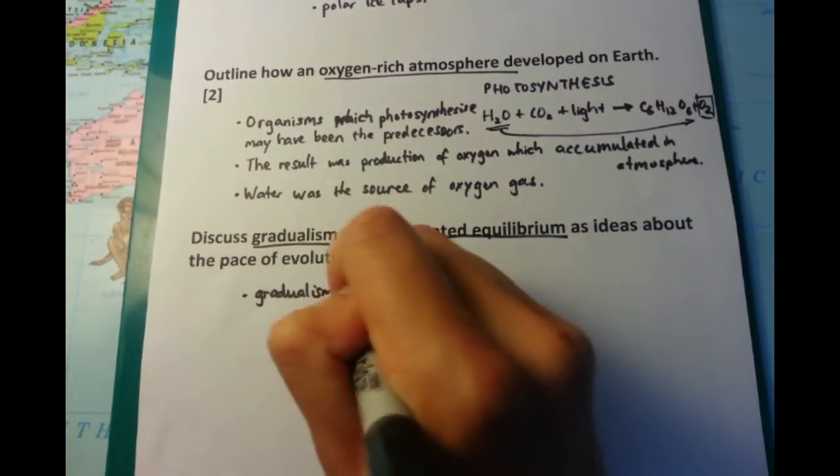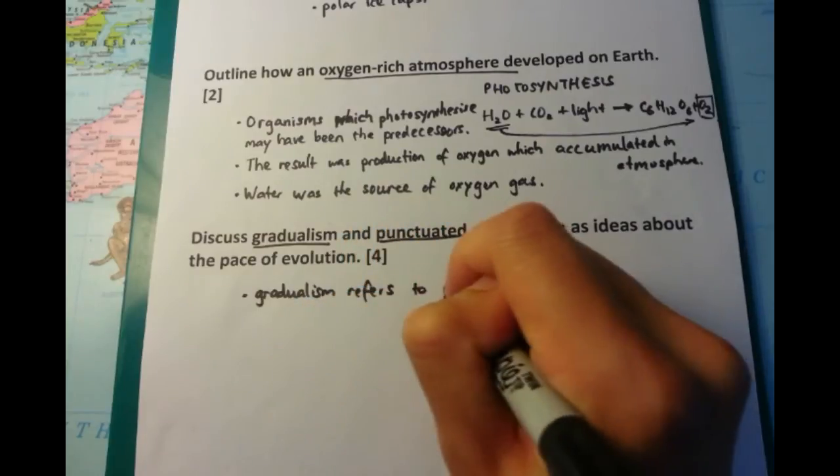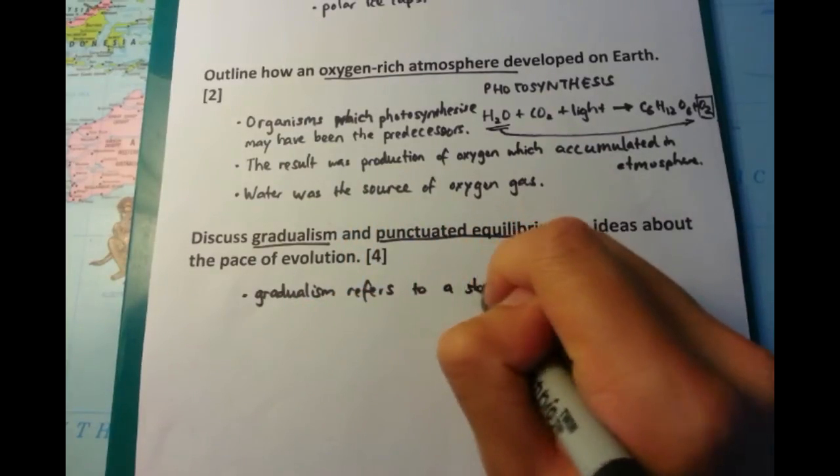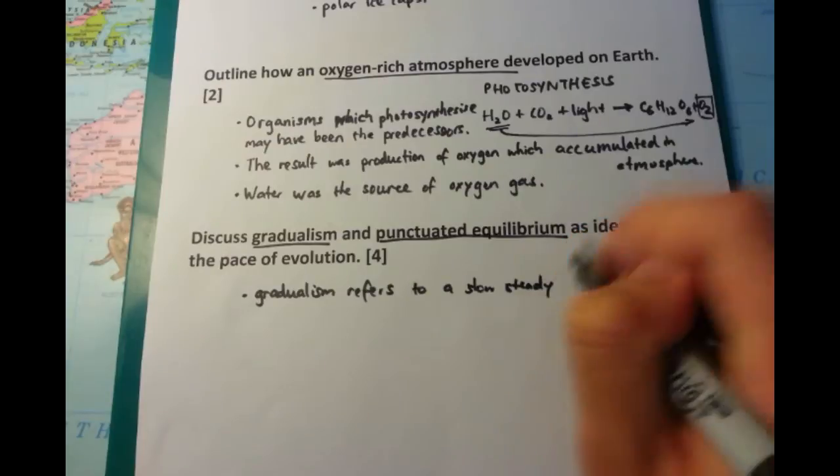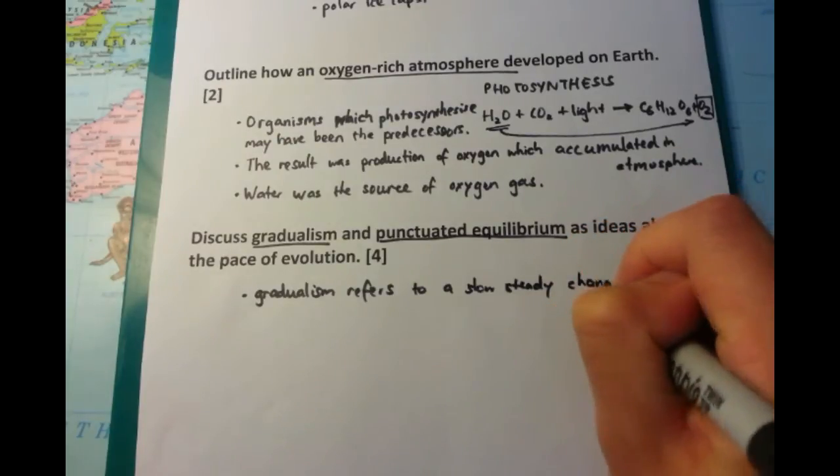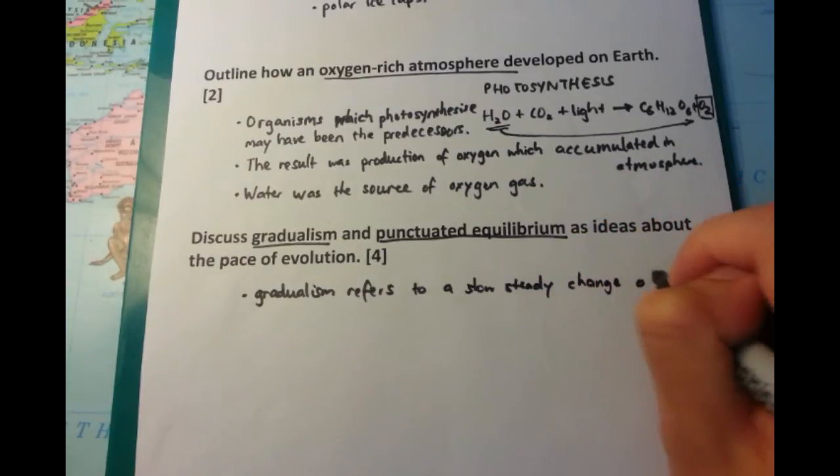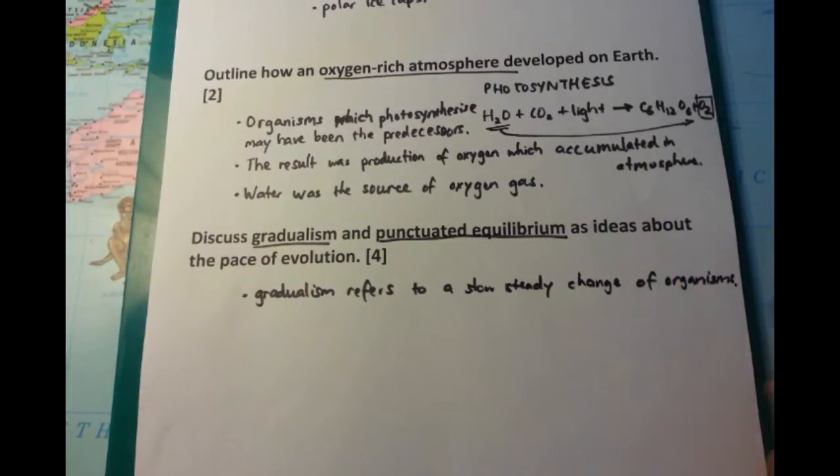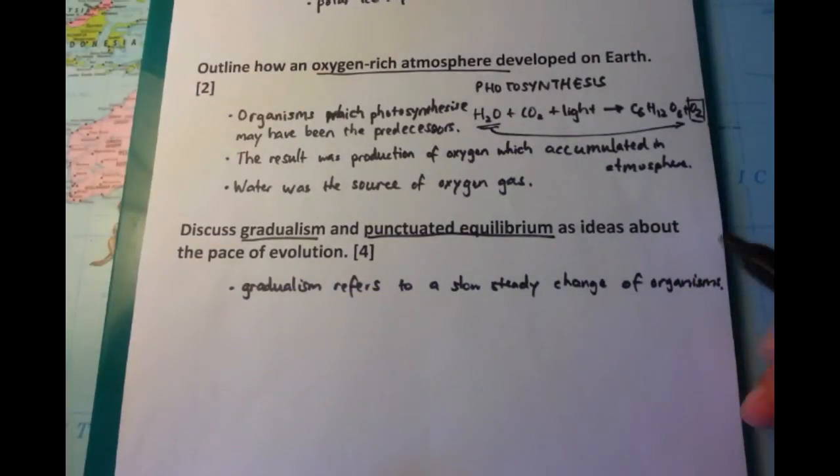The next part is a bit of a tricky question because it's a four-mark question and requires at least four points to get the full marks. We want to talk about both gradualism as well as punctuated equilibrium. And the first thing we're going to do is we're going to talk about gradualism. And that refers to a slow and steady change in the form or stage of evolution of the different organisms.